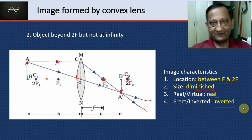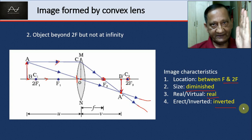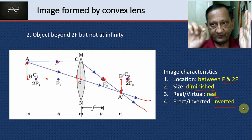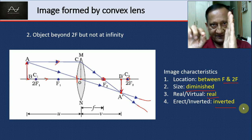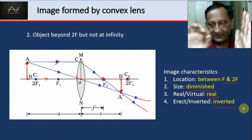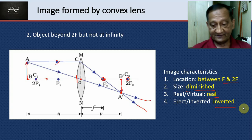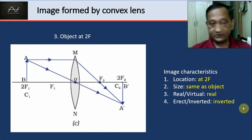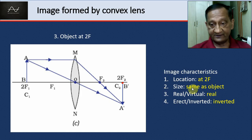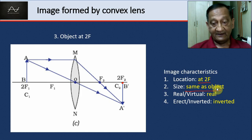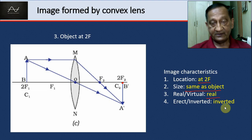So far: if the object was at infinity, the image was at the focal point. As the object comes closer, the image goes farther — this trend continues for five positions. The third position is at 2F. Using the same two rays, the image forms at 2F on the other side and is the same size as the object — real and inverted. You can see the image is going farther and farther and its size is increasing also.